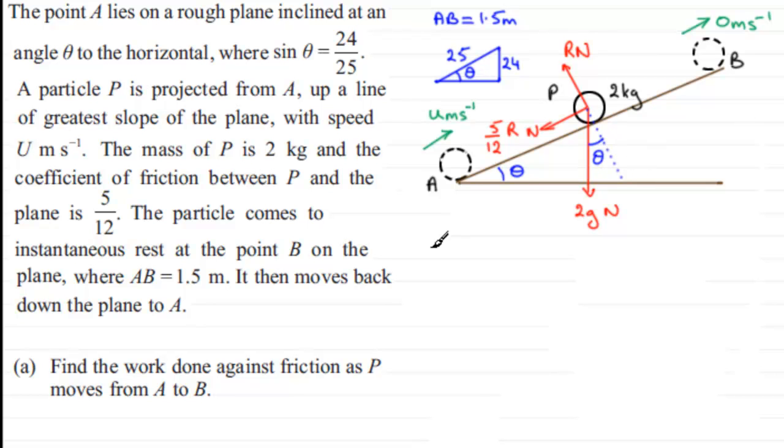So when we resolve perpendicular to the plane, let's just indicate that by putting an arrow out there, taking away from the plane as positive, we've got all of the reaction, R. OK?